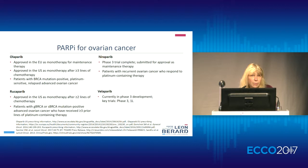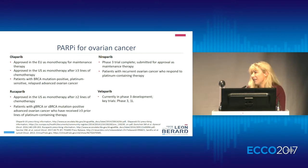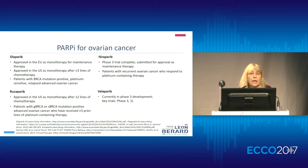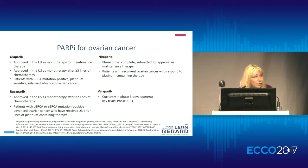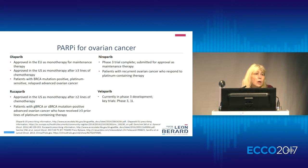Looking at the different compounds available for us in ovarian cancer: the first one is Olaparib, approved in Europe in maintenance treatment. It is a switch maintenance, but also a maintenance treatment as monotherapy. It is also available for patients with BRCA mutation in monotherapy after three or more lines of treatment. All indications are dedicated to patients with BRCA-mutated ovarian cancer. The second one is Rucaparib, approved in the US but not in Europe, in monotherapy for patients receiving two or more lines of chemotherapy in the sensitive or resistant group, and also for patients with BRCA mutation ovarian cancer.